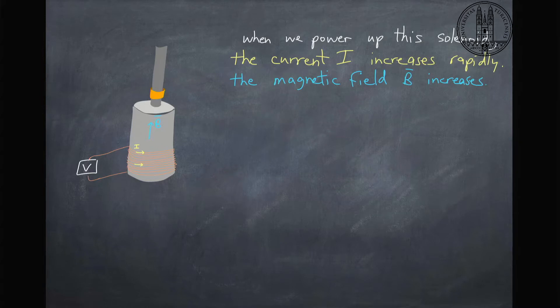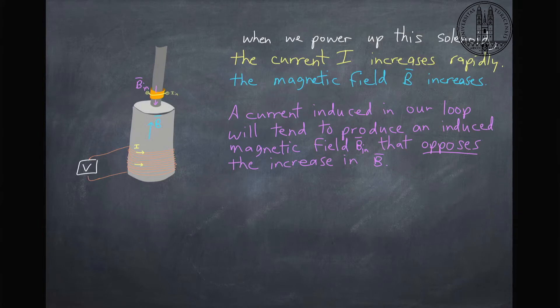And this magnetic field is going to increase very rapidly when we turn this thing on. And what happens is according to Lenz's law there's going to be a current that's induced in our little ring which is sitting on top here. And that current will be in a direction such that a magnetic field will be induced in the opposite direction of B.